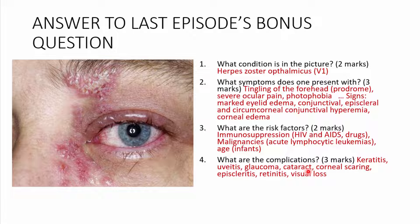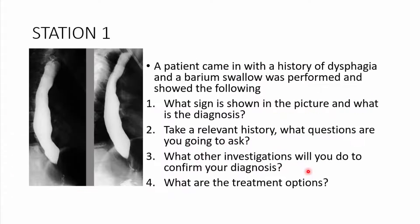Now let's go into today's episode and look at surgery. Station 1: a patient came in with a history of dysphagia and a barium swallow was performed. What sign is shown in the picture and what is the diagnosis? Take a relevant history. What other investigations will you do to confirm your diagnosis? What are the treatment options?